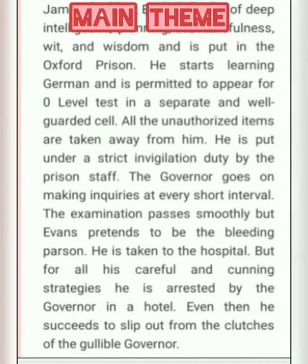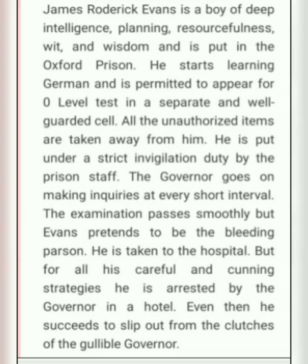The main theme of this module is as follows: James Roderick Evans is a boy of deep intelligence, planning, resourcefulness, wit and wisdom, and is put in Oxford Prison. He starts learning German and is permitted to appear for an O-Level test in a separate and well-guarded cell. All unauthorized items are taken away from him and he is put under strict invigilation. Jackson and Stephens are appointed to keep an eye on Evans because he had run away from jail three times earlier, and the governor did not want Evans to break jail a fourth time.